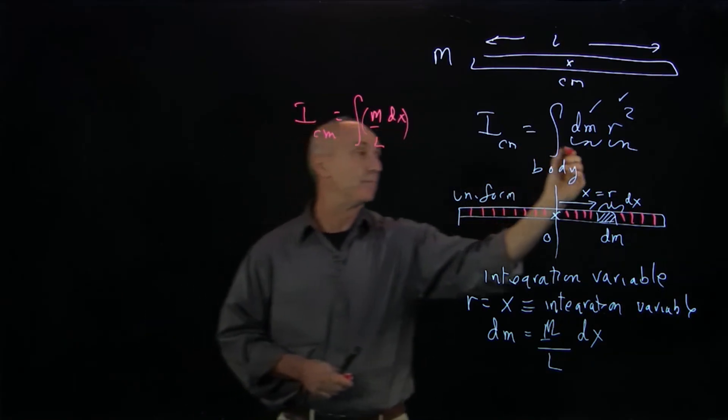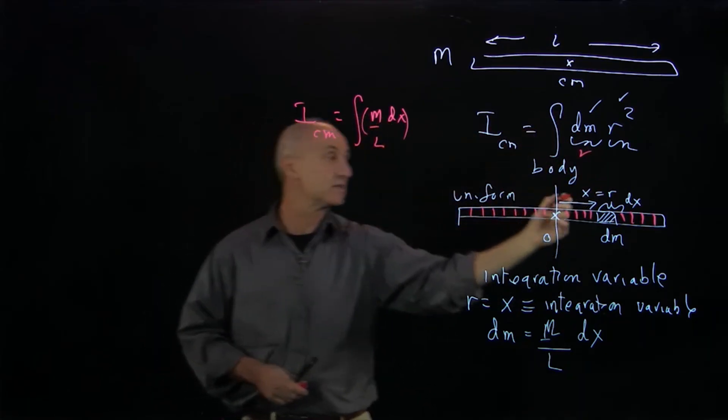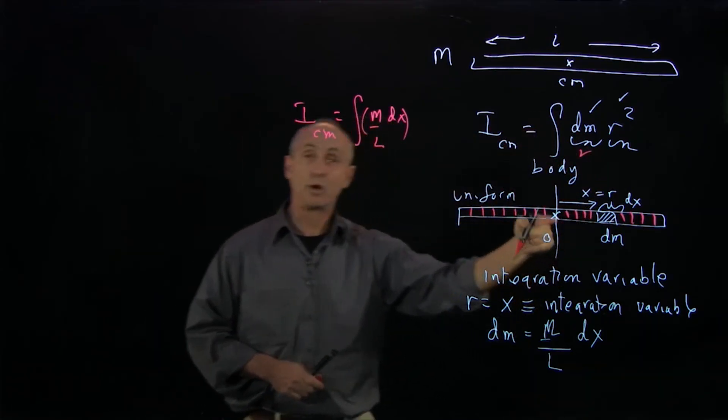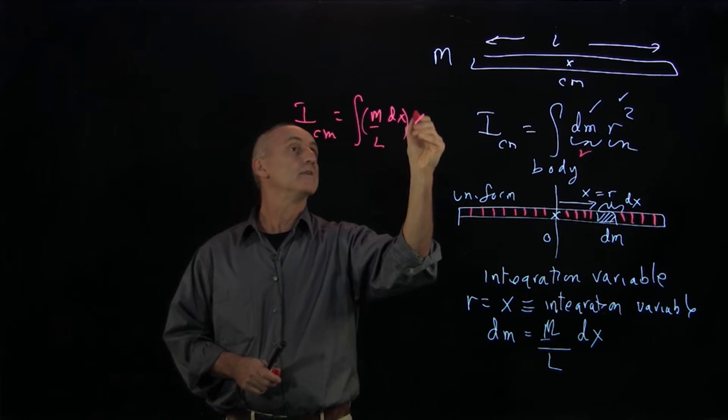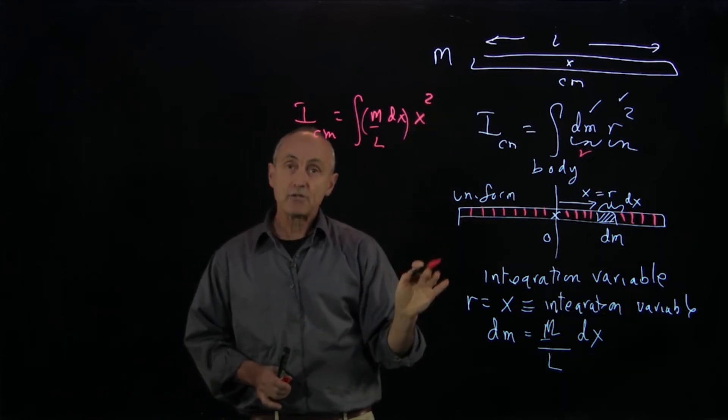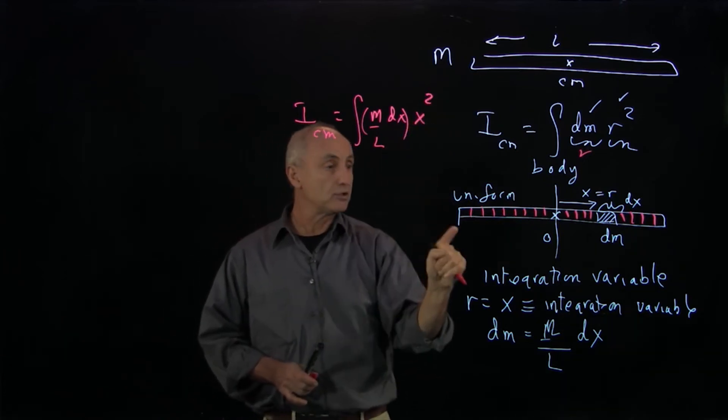That was our dm. And the distance of dm from the axis we're computing is x squared. The question is, what is our integration variable doing?